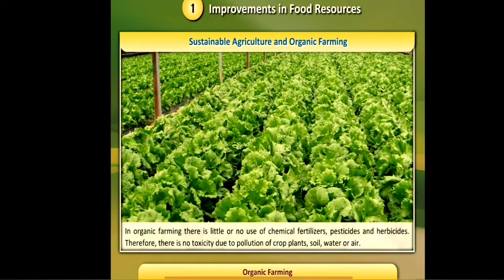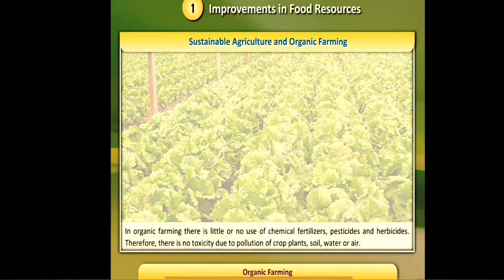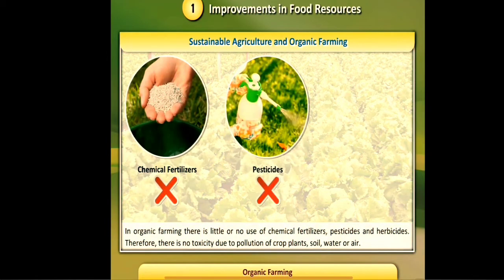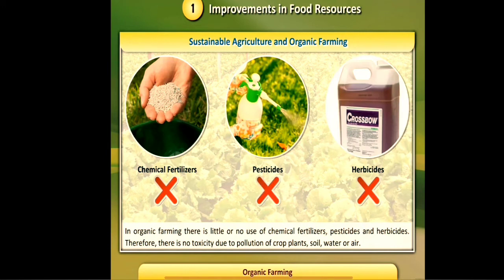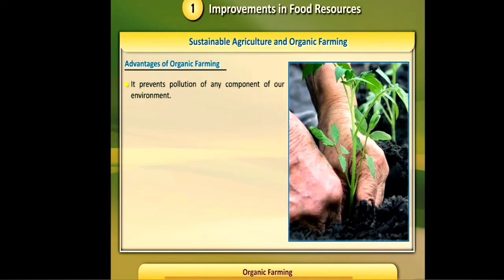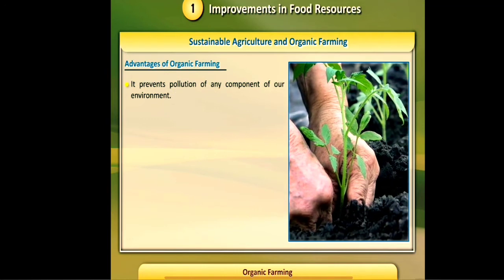In organic farming, there is little or no use of chemical fertilizers, pesticides, and herbicides. Therefore, there is no toxicity due to pollution of crop plants, soil, water, or air.